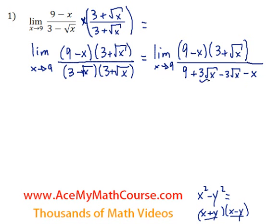Now look at this. These two cancel out. 3 root x minus 3 root x is just 0. So down at the bottom, we end up with 9 minus x.